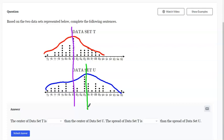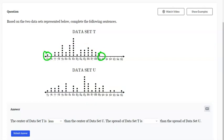So now we can compare that the center of data set T is less than the center of data set U and that the spread, which is the distance between the lowest and highest values of these data sets, is greater for the set U. So that means that data set T also has less than the spread of data set U.